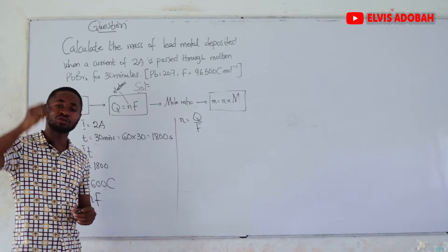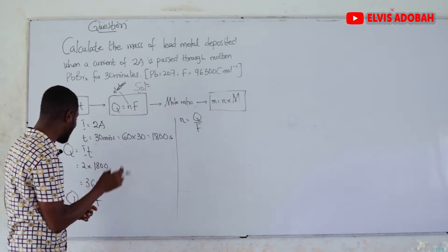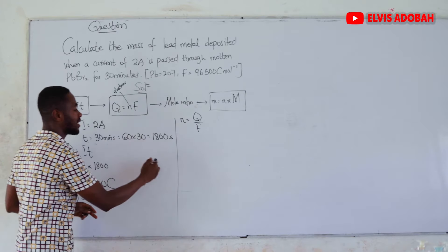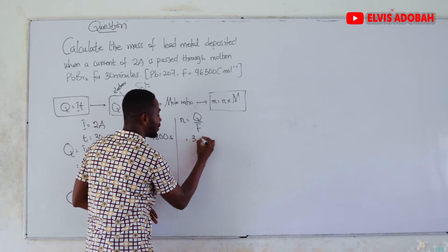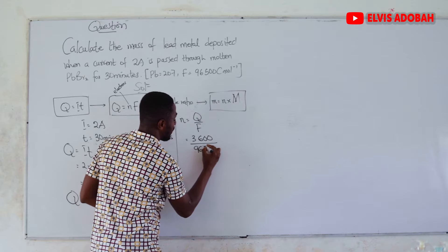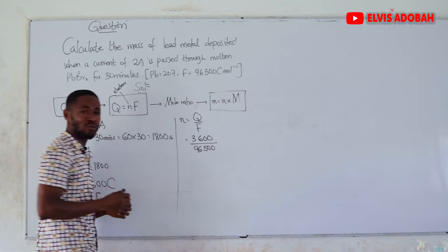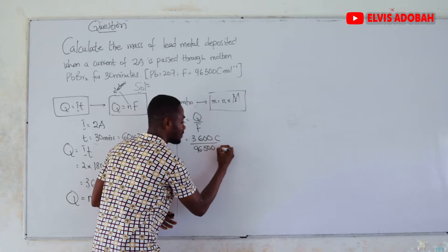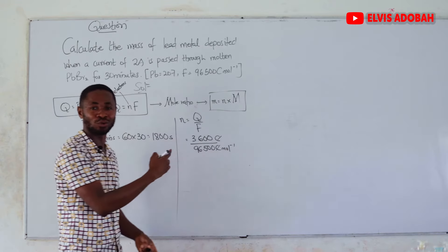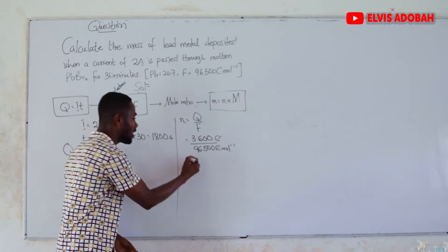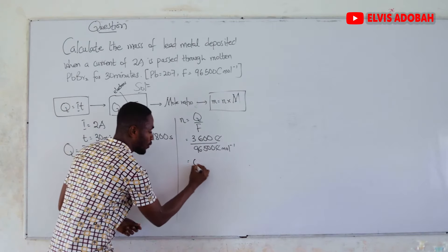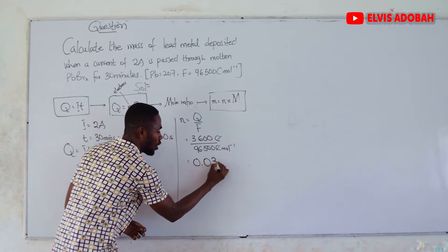That means our N, when we make it a subject, will be equal to Q over F. If you want to know the amount of electrons in moles, we just divide this quantity of electricity in Coulomb by our Faraday's constant. So, 3,600 Coulomb divided by 96,500 Coulomb per mole. Coulomb will cancel Coulomb.